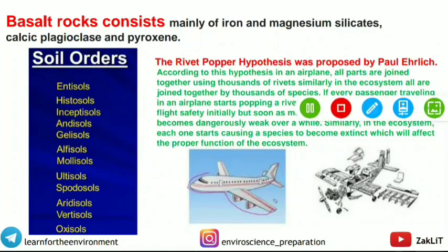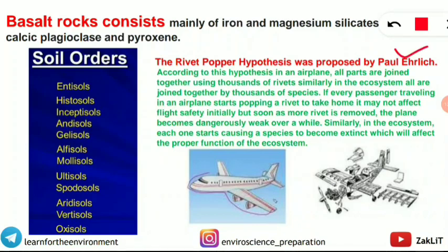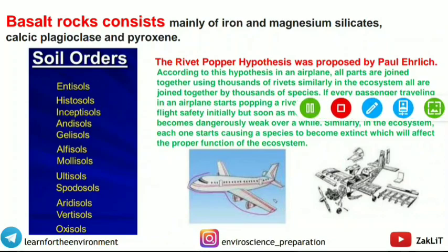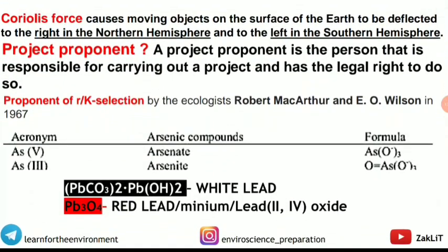The Rivet Popper Hypothesis was proposed by Paul Ehrlich. He explained how ecosystems are affected as species go extinct one by one, using an aeroplane analogy: rivets are like species — removing one or two screws won't crash the plane initially, but removing all of them eventually causes the whole plane to collapse. Similarly, successive species extinctions will eventually cause ecosystem collapse.